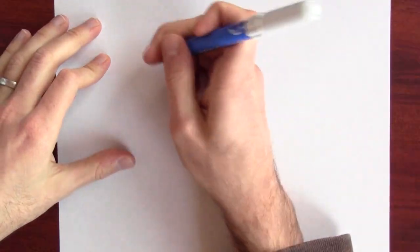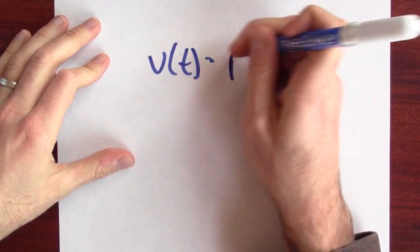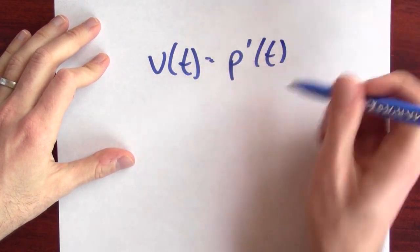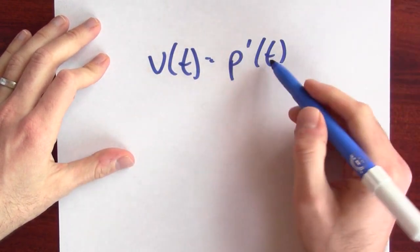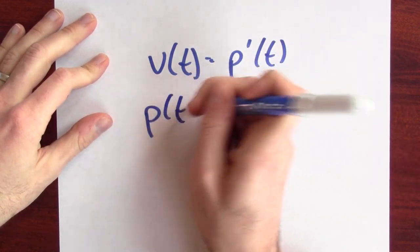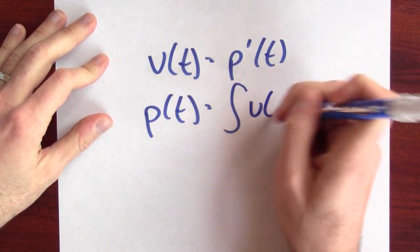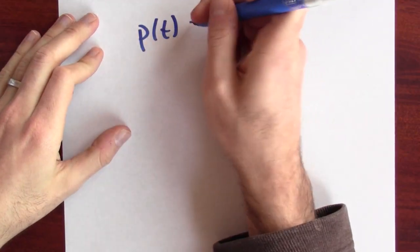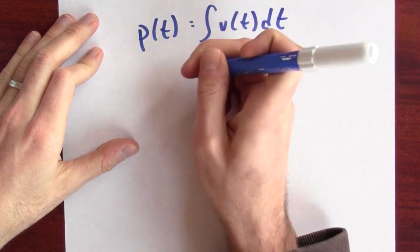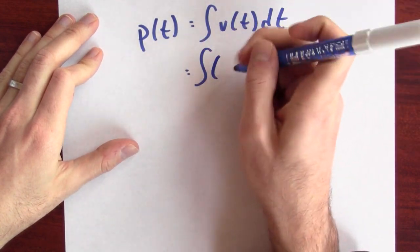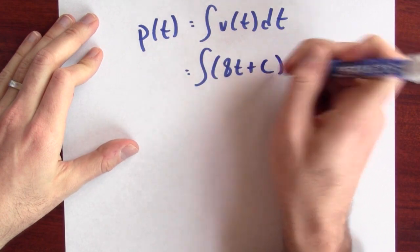Now, can I use that formula to determine my position? Same kind of game. My velocity is the rate of change in my position. My velocity is the derivative of position. And that means position is an anti-derivative of velocity. So, let's anti-differentiate. p of t is an anti-derivative of my velocity, and I figured out my velocity a minute ago. My velocity is 8t plus c.